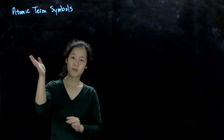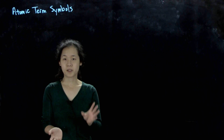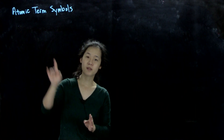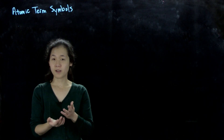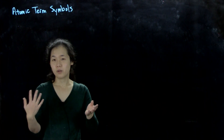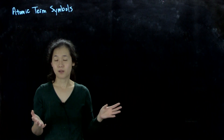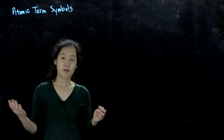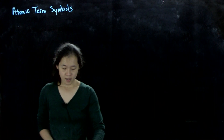Let's find some atomic term symbols for some electron configurations. These are free atoms, so we're going to use orbital configurations like S1, S2, D1, D2, and not molecular configurations like T2, G1.